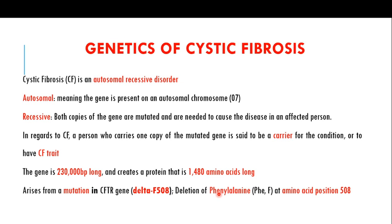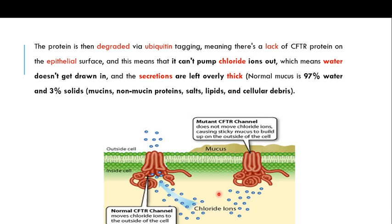Because of the deletion of phenylalanine, the different symptoms of cystic fibrosis arise. The mutated CFTR protein is degraded by ubiquitin tagging, resulting in a lack of CFTR protein on the epithelial surfaces, which means it cannot pump chloride ions out. The normal CFTR protein pumps chloride ions from inside the cell to outside, keeping mucus thin. Without functioning CFTR, chloride ions cannot move out and the mucus on epithelial surfaces becomes thick.